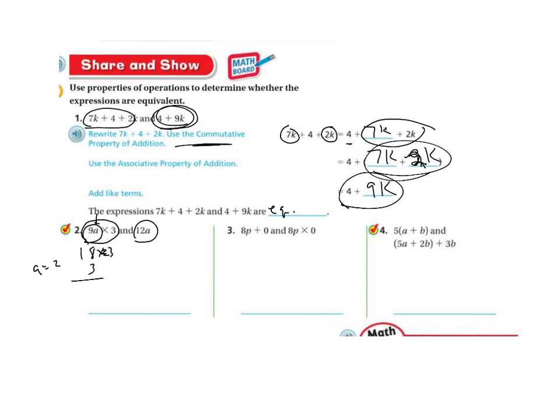3 times 8 is 24, 3 times 1 is 3, plus 2 is 5. So this side would be 54. And then on this one, if I put in that same 2 for a, 12 times 2 is 24. Definitely not equivalent.